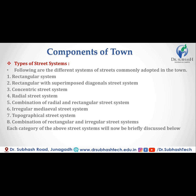In this subject we will continue with Unit Number Six: Components of the Town. We discussed in the previous lecture types of street systems, like rectangular street system, rectangular with superimposed diagonal street system, concentric street system, radial combination, combination of radial and rectangular street system, irregular and medieval street system, topographical street system, and combination of rectangular and irregular street system.